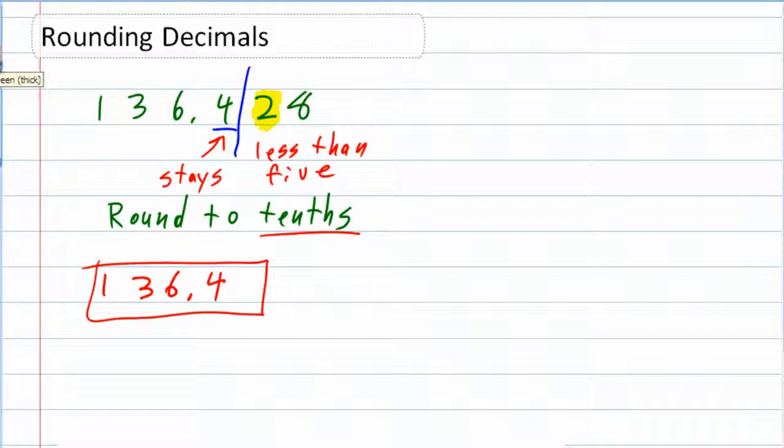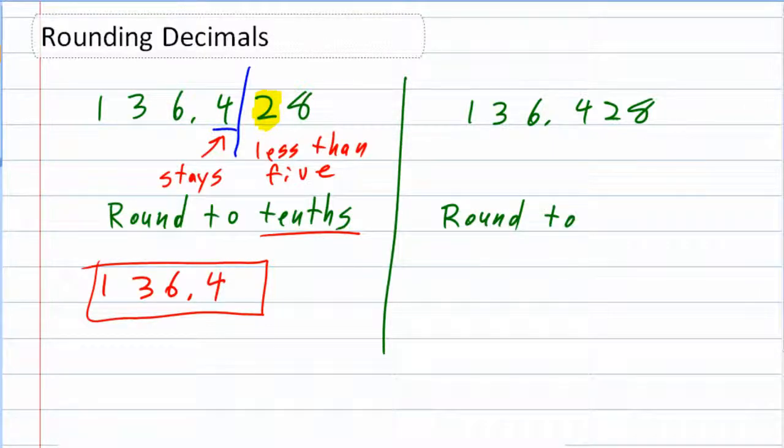What if I had the same number? 136.428. But this time, I'm trying to round to the hundredths place. So hundredths, this time the 2 is in the hundredths place. I'm looking to cut it off behind the 2.